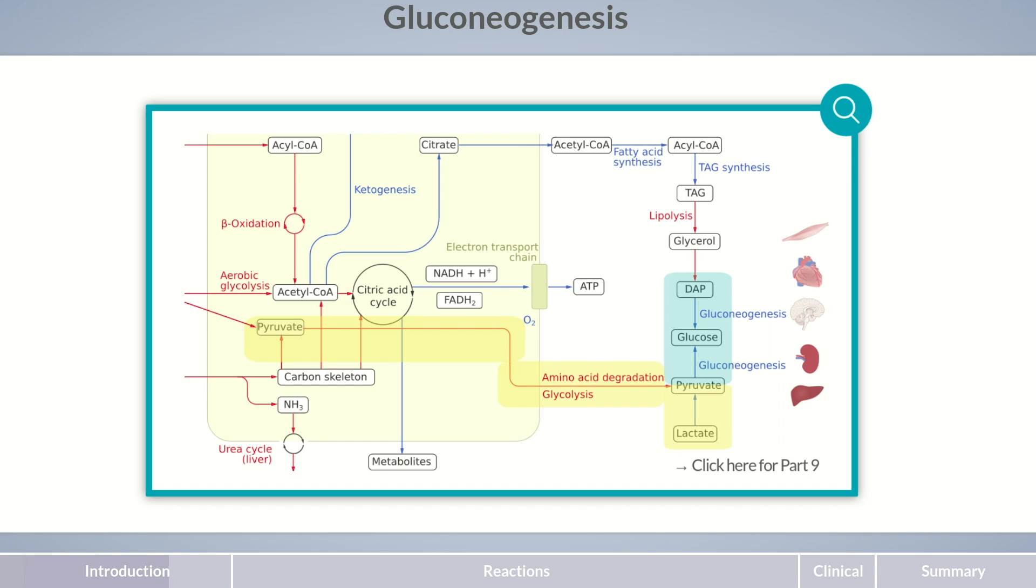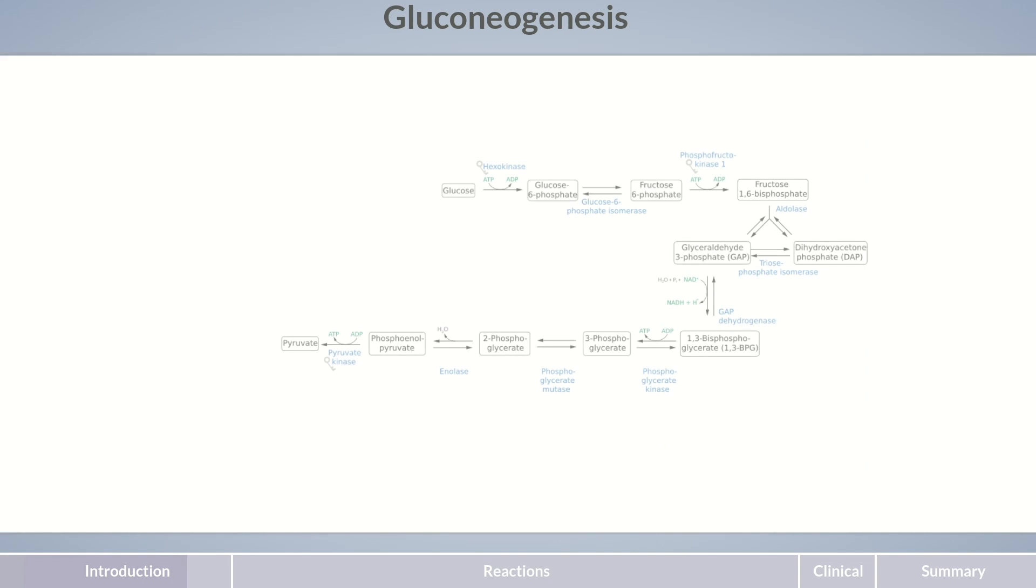Now, let's go through the process of glucose synthesis. Glucose production is essentially the reversal of glucose breakdown. Consequently, most reaction steps in gluconeogenesis are the reverse reactions of glycolysis. So, to understand gluconeogenesis, you should be familiar with the reactions occurring in glycolysis.